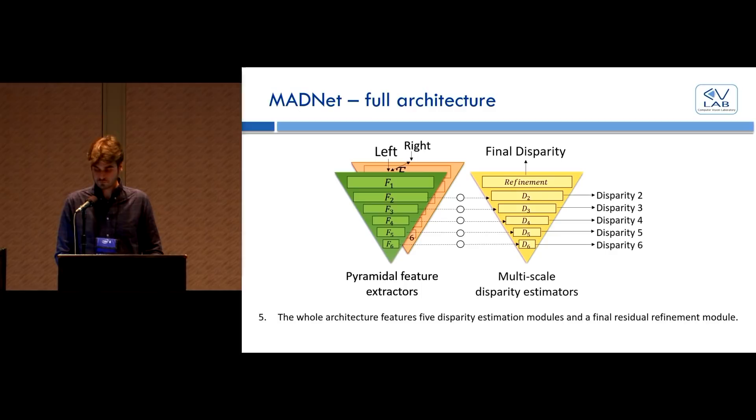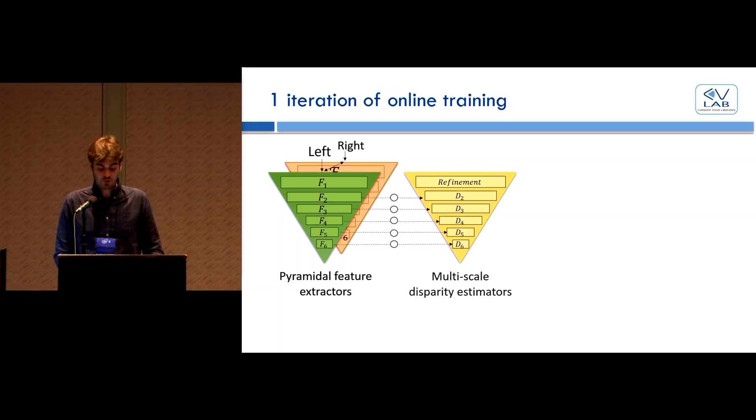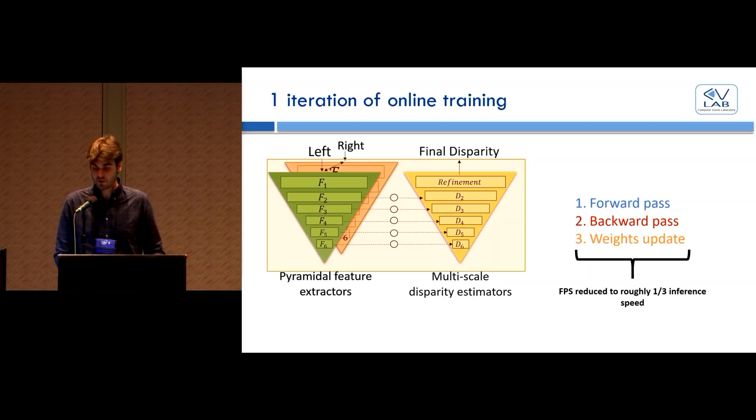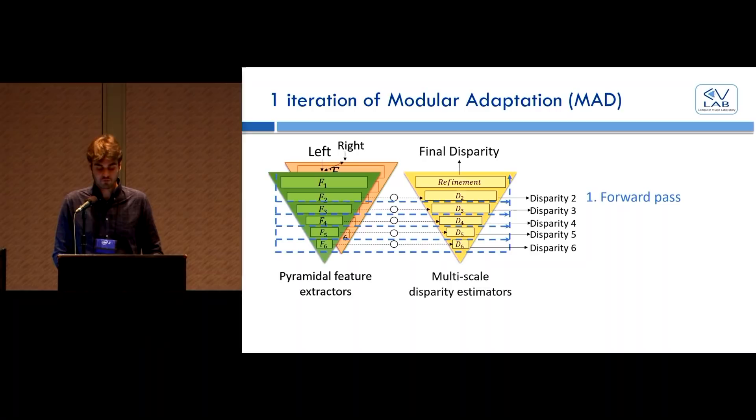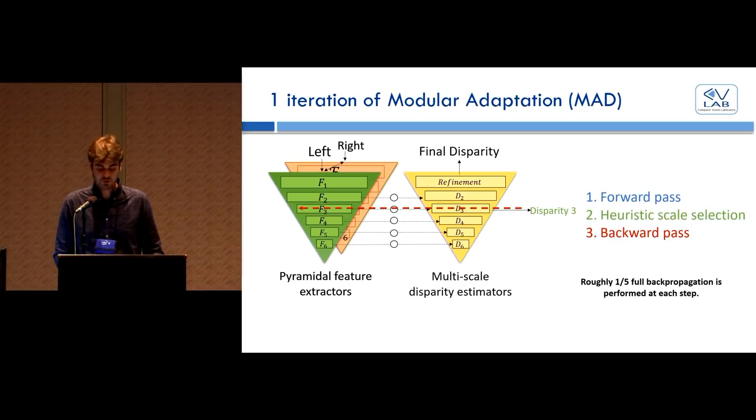Even with a fast architecture, continuously training the network online can be computationally expensive, requiring for each frame a forward pass, a complete backward pass, and an update of all the parameters of the network. Repeating this process for each incoming frame results in a drop of inference speed to about one-third of the forward pass only, a performance penalty that is often too severe. For this reason, we have developed MAD, where first we perform a forward pass saving all the disparities computed at different scales. Then we use a heuristic to select one scale that will be trained at this iteration, scale 3 in this case, and compute a loss function directly on the low resolution prediction, disparity 3 in this case. Then we perform an approximated backpropagation among layers working at the same resolution and finally update their parameters. This strategy backpropagates roughly across one-fifth of the network layers, speeding up the frame rate a lot.